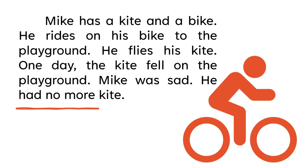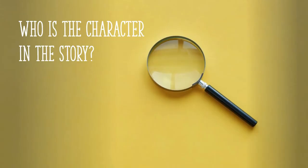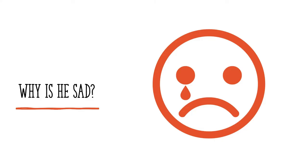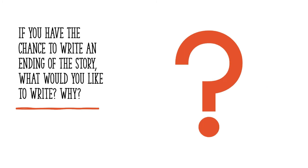Let's read this all together: Mike has a kite and a bike. He rides on his bike to the playground. He flies his kite. One day, the kite fell on the playground. Mike was sad — he had no more kite. Who is the character in the story? Why is he sad? If you have the chance to write an ending of the story, what would you like to write, and why?